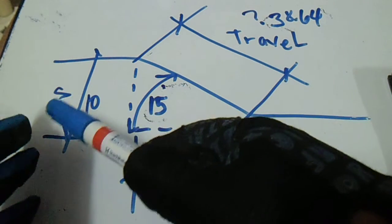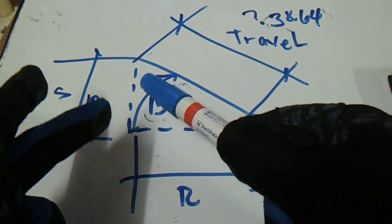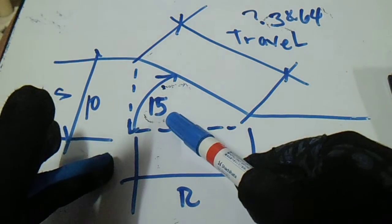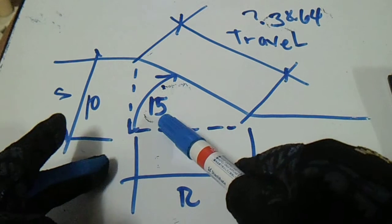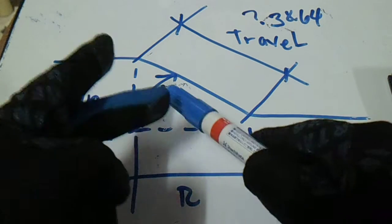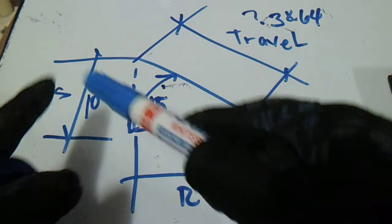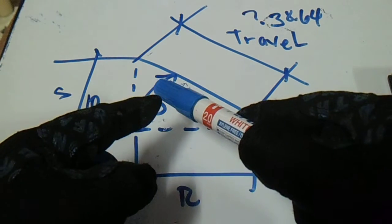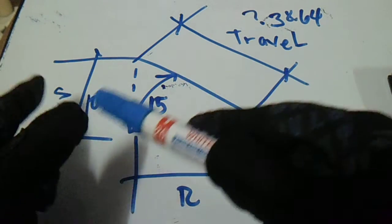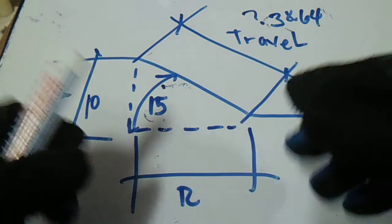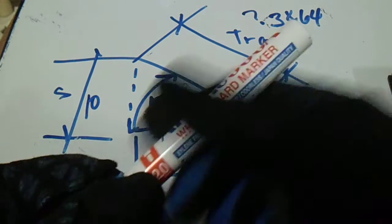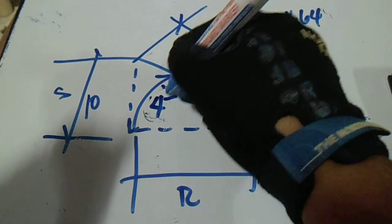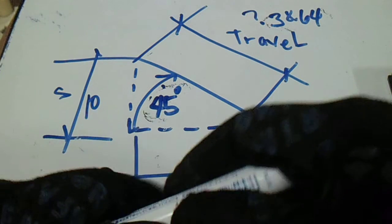For any degree, just multiply the set by the cosecant of that degree. If this is 9 degrees, multiply the set by the cosecant of 9 degrees. If it's 7.5 degrees, the cosecant of 7.5 degrees is 7.66. For 45 degrees, just multiply by 1.414.